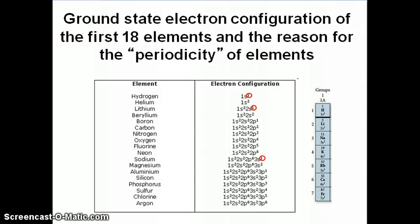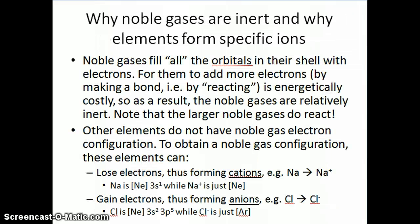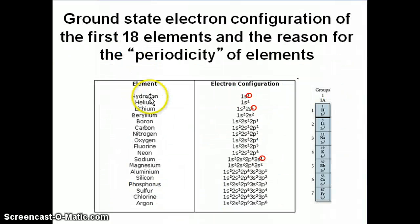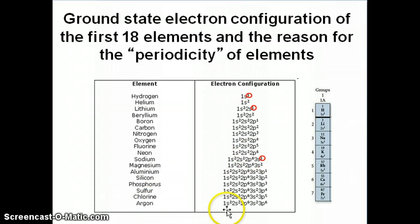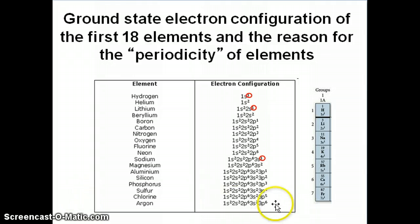The second thing we can talk about is why noble gases are inert and why elements tend to form ions of a certain charge. If you look at noble gas configurations: helium is 1s2; neon is 1s2, 2s2, 2p6; and argon is 1s2, 2s2, 2p6, 3s2, 3p6. What do you notice about these configurations? You notice that they max out — they fill all the orbitals in that particular shell.